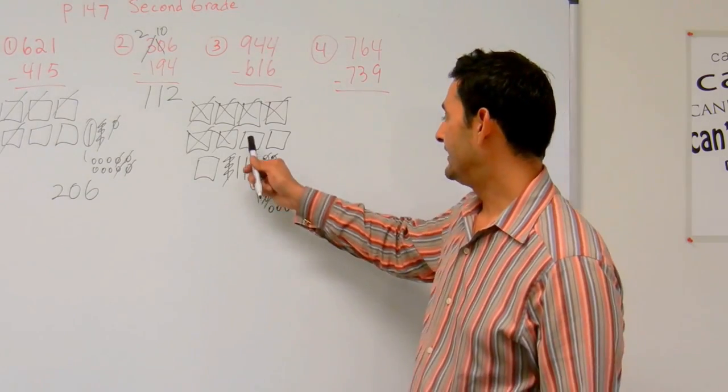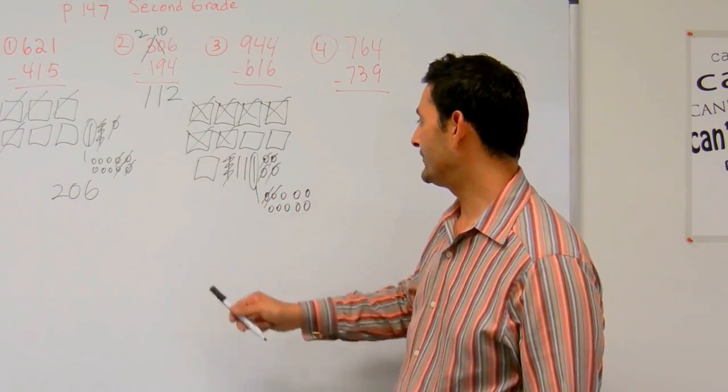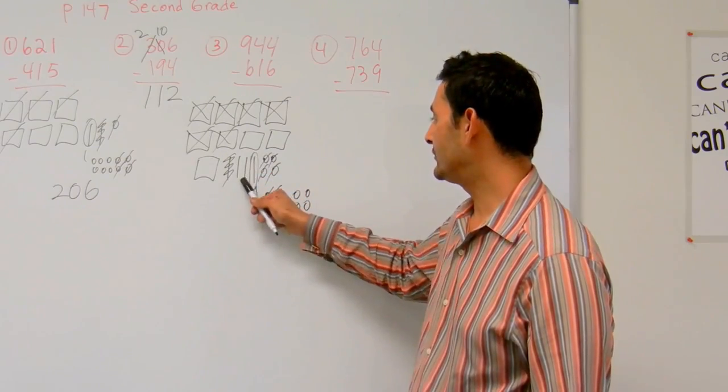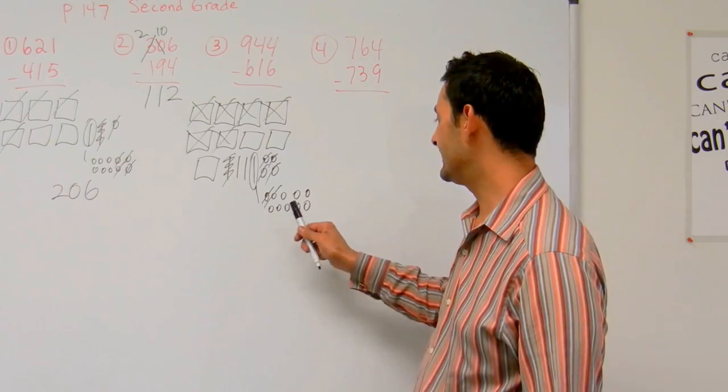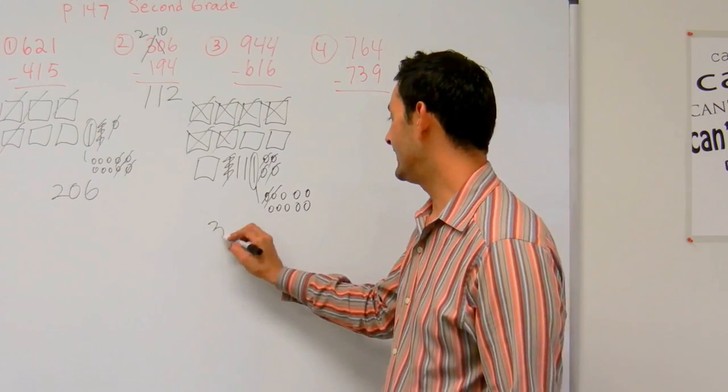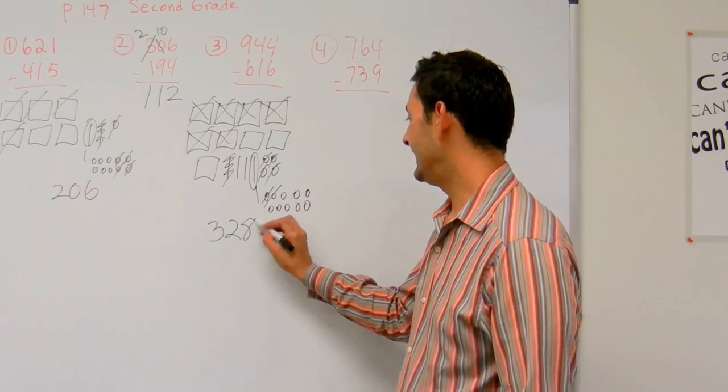So what do I have left? I've got 100, 200, 300, 320, and then 321, 22, 23, 24, 25, 26, 27, 28. So I've got 328.